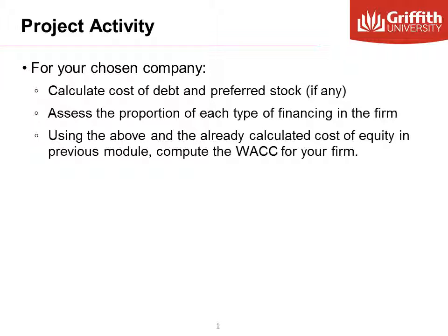This project activity involves calculating the cost of debt and preference share, if any, assessing the proportion of which type of financing in the firm, and then using the above and the already calculated cost of equity from a previous module to calculate the weighted average cost of capital for your firm.